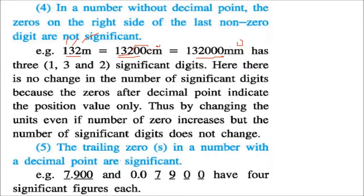Then the trailing zeros in a number with a decimal point are significant. So if we have a decimal, the trailing zeros are significant. For example, ignoring the leading zero, 7900.00 has four significant figures.